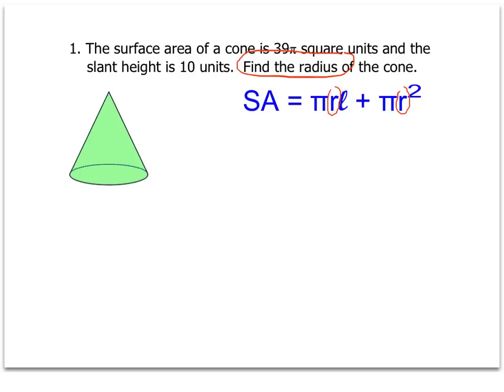And now I'm going to put in the information I know. I know the total surface area is 39 pi. This represents the total surface area. And I know that the slant height is 10. Remember, the slant height is represented by the cursive L.